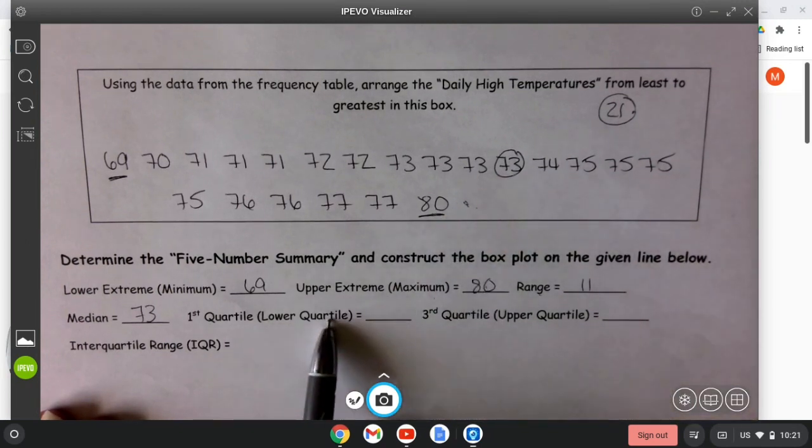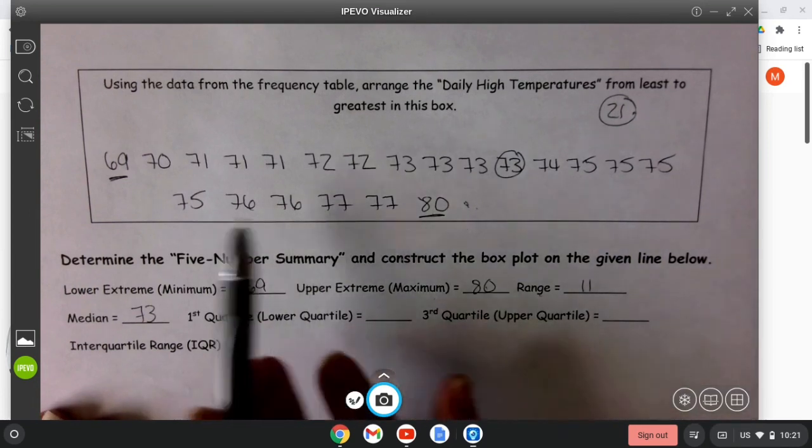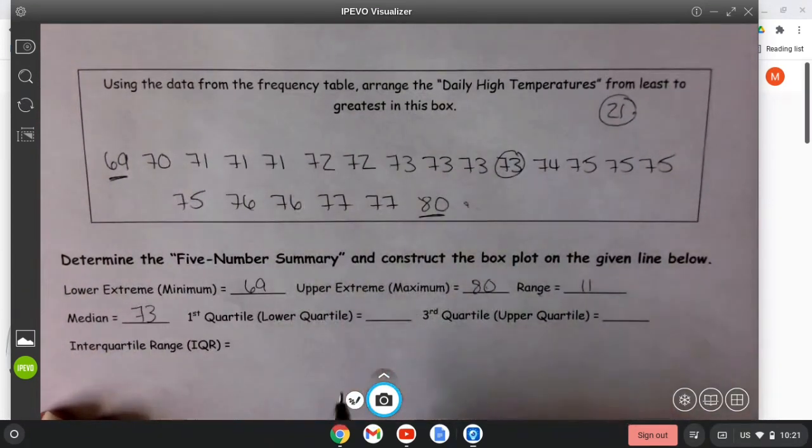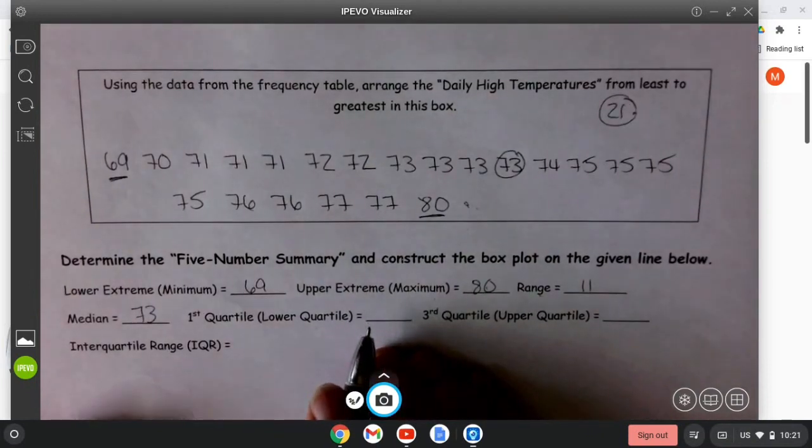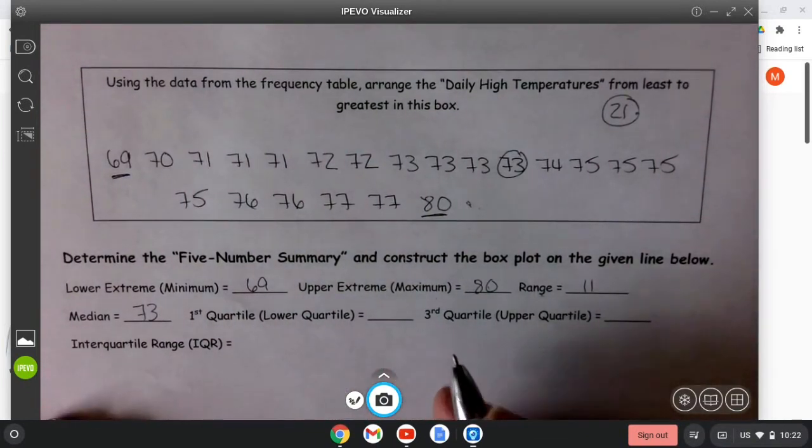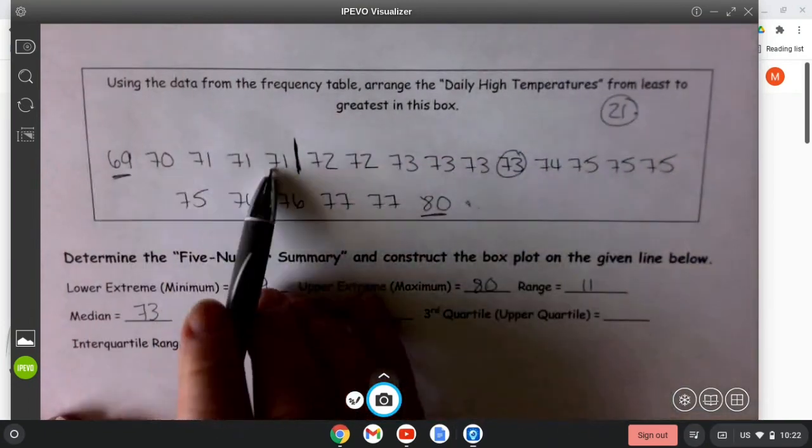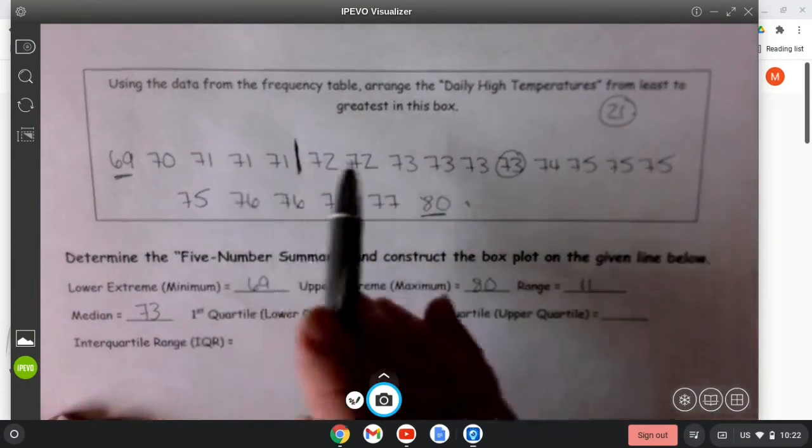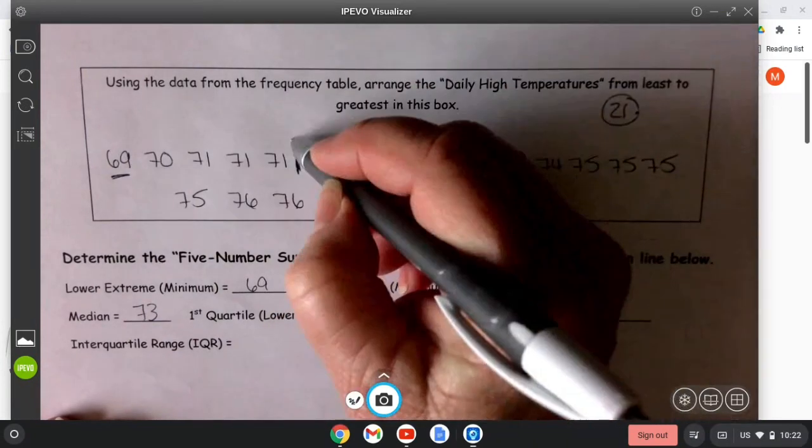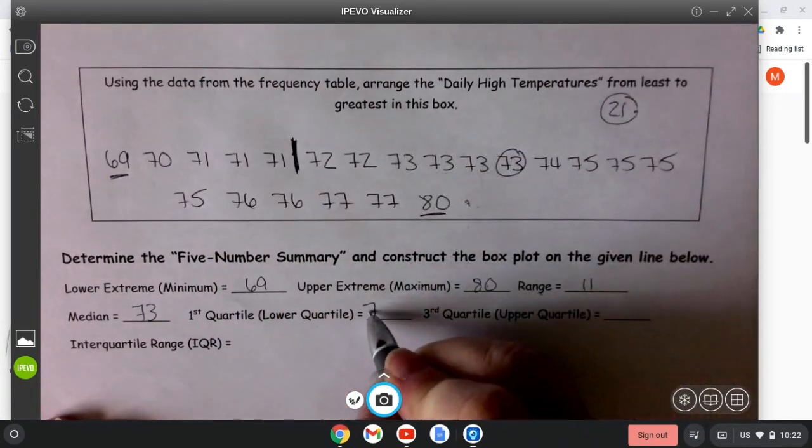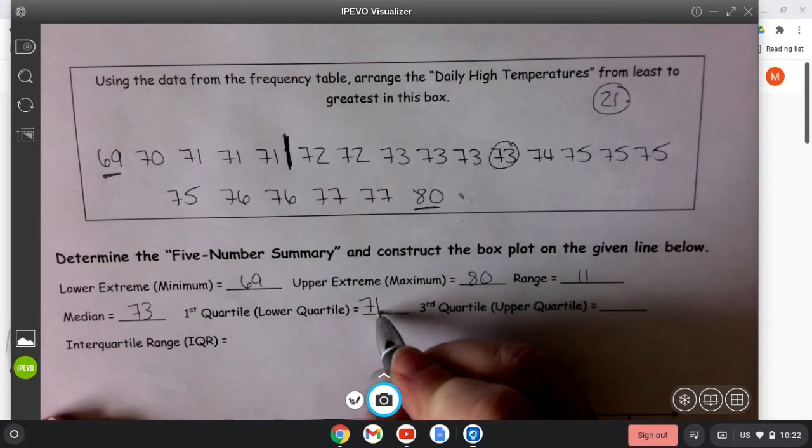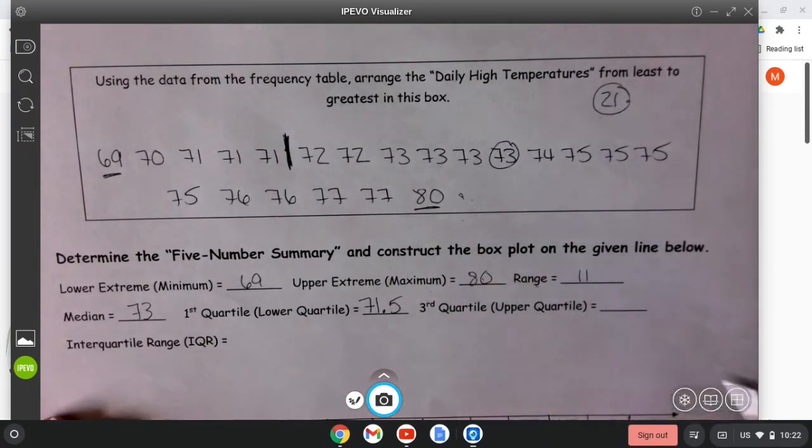Our next point that we're going to determine is called the first quartile or the lower quartile. We find the median of this group of numbers, and so the median of this group of numbers is going to be right here in the middle. Notice how there's five numbers here and five pieces of data here, so this is going to represent the middle, and in the middle of 71 and 72 is 71.5.